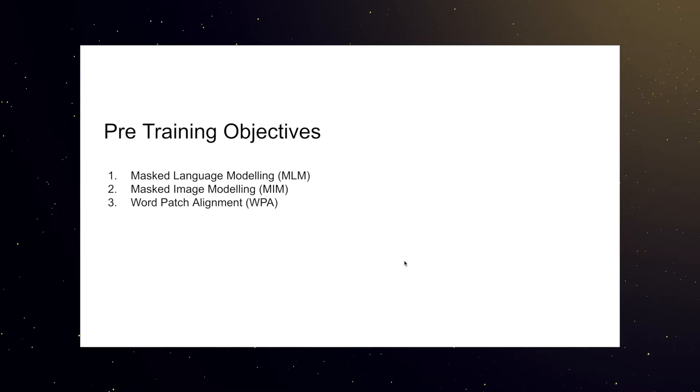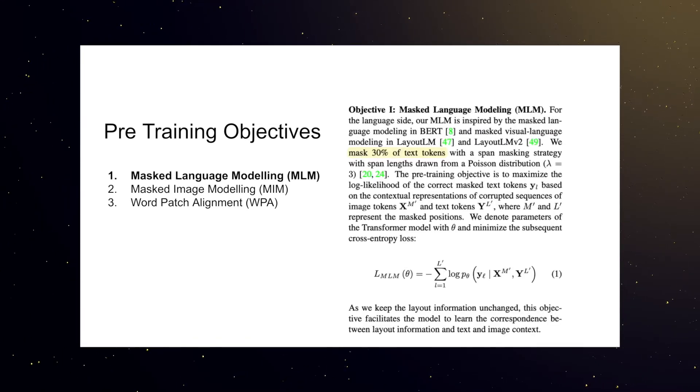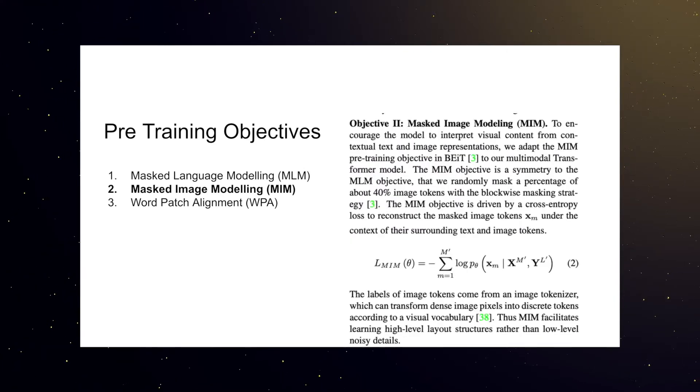One, masked language modeling, which is simply masking text and trying to predict it. Masked image modeling, which is just like masked language modeling but with images.